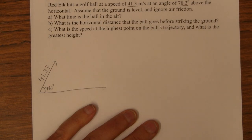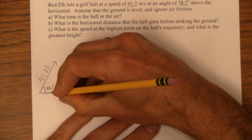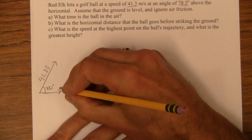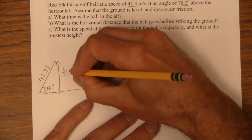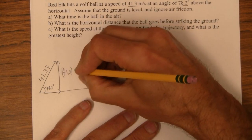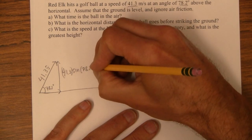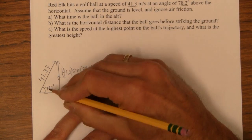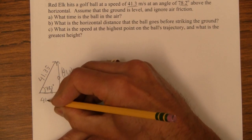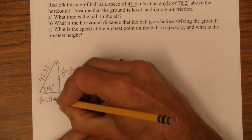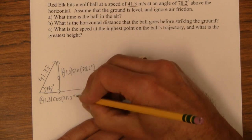The first thing you have to do with this is we can't do anything with this angle magnitude vector until we find its components. So I'm going to break this into two components. This side here is going to be 41.3 times the sine of 78.2 degrees because this is the opposite side, so I'm just doing SOHCAHTOA. This side here is going to be 41.3 times the cosine of 78.2 degrees.